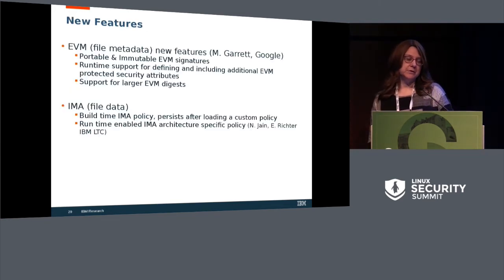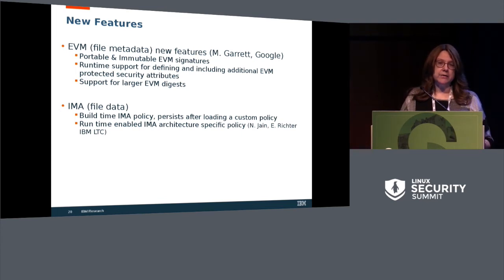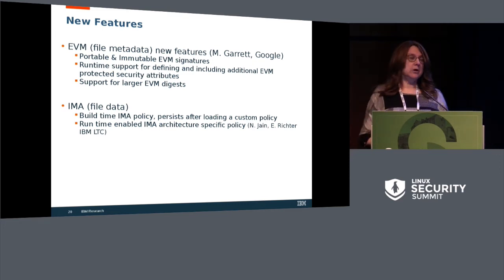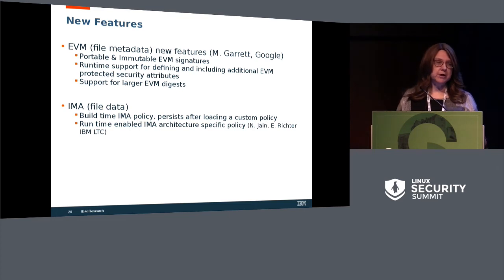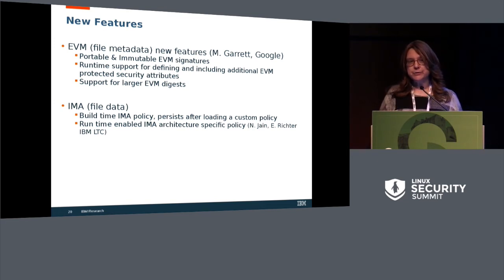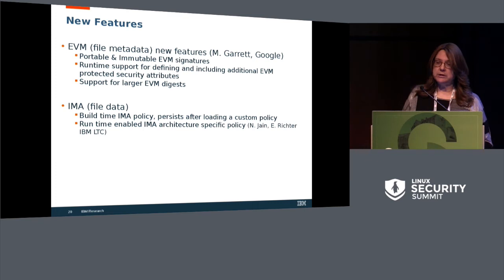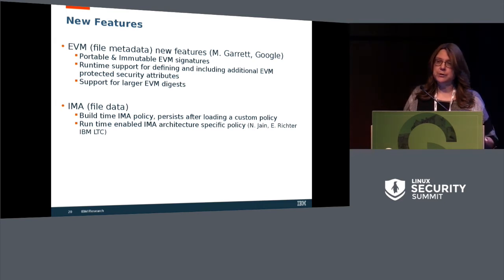This brings us to the new features. We've already spoken about portable and immutable EVM signatures, done this past year by Matthew. The other piece is support for adding other security extended attributes. Initially it wasn't limited to security extended attributes, but for the time being — because only root can write security extended attributes — we're limiting it to root and to security extended attributes. We'll have to look in the future as to whether it's possible to include other extended attributes or other information as well.